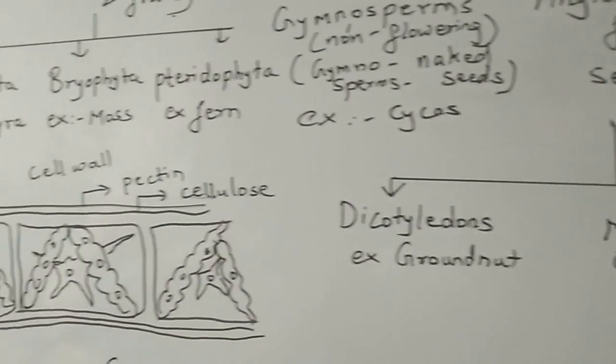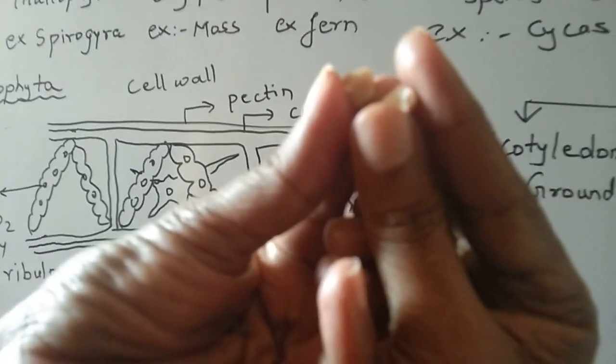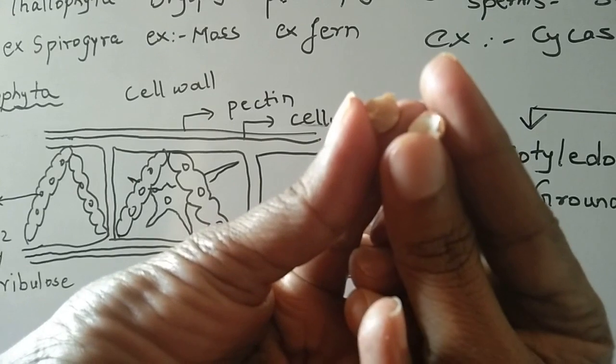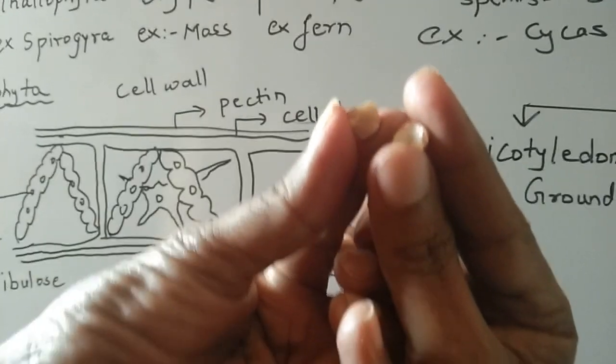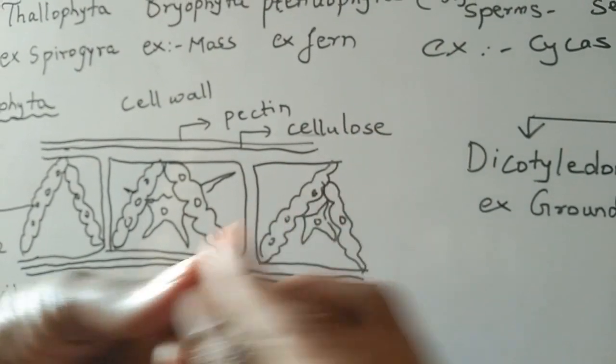If you apply pressure on the groundnut seed, you will see that it gets broken up into two cotyledons. These two parts will be called as cotyledons, so it will come under dicot.